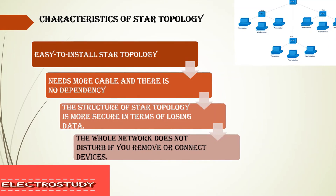When using star topology, data losses are minimized. The whole network will not be disturbed if there is any minor failure. For example, if a node's connection with the hub is not functioning, only that node will fail but all other nodes will continue performing their functions. So the whole network is not disturbed even when a small failure occurs.